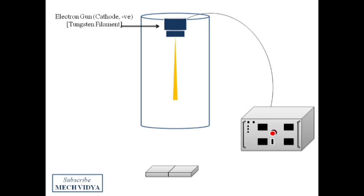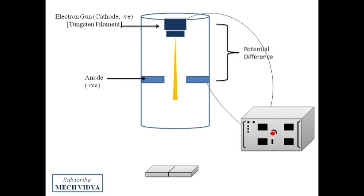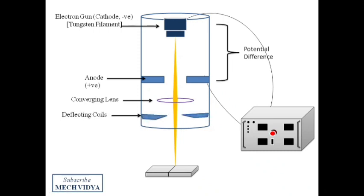To accelerate the electrons and to make them flow along a single direction, a positive terminal — that is, an anode — is introduced. As a result of this anode, a potential difference is set up between the cathode and the anode, which makes the electrons flow at a very high velocity. After this, a converging lens is introduced which focuses all the beam of electrons into a small constricted zone. The beam is then made to pass through a deflecting coil, which is nothing but a magnetic lens. It is through this deflecting coil that we can control the beam and make it fall in regions of our choice.